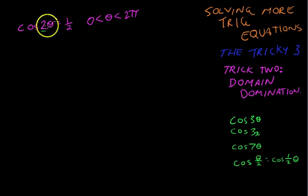Now the trick to this is that we need to solve this for theta. But we're used to solving all of that. And we need to solve theta in a particular domain. We need to solve theta in between zero and two pi. So first what we're going to do is solve it for two theta.